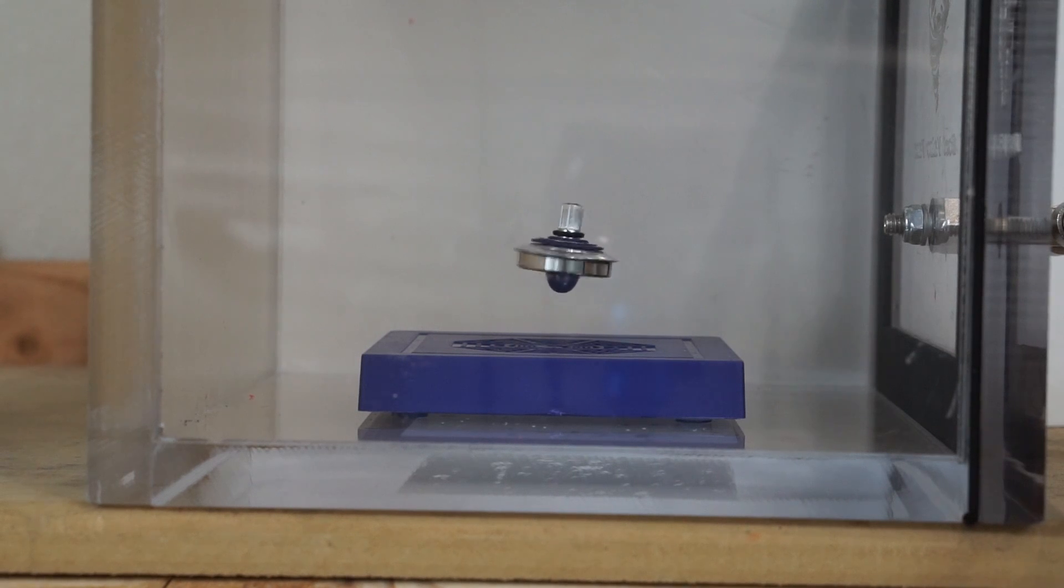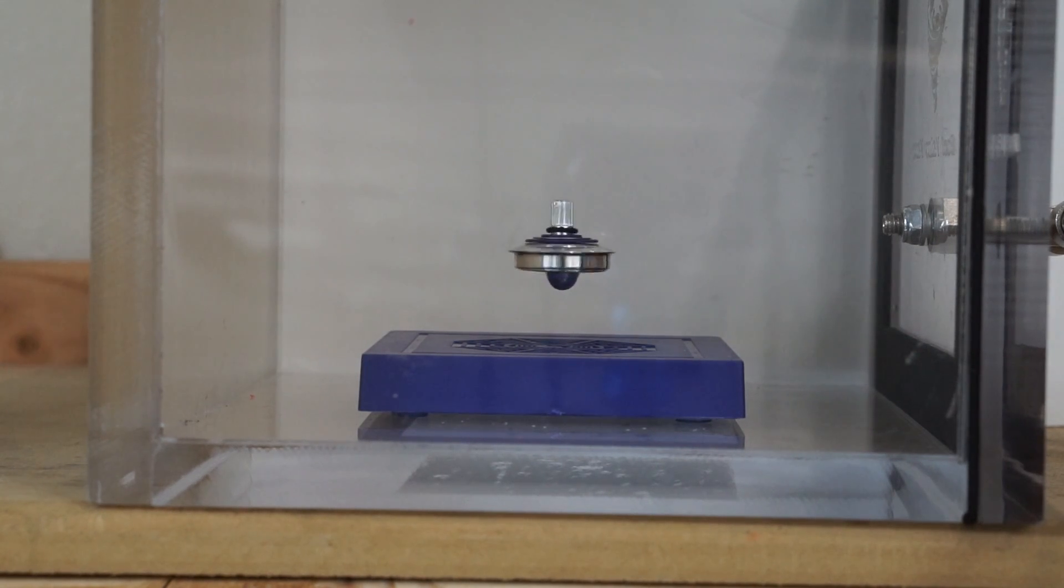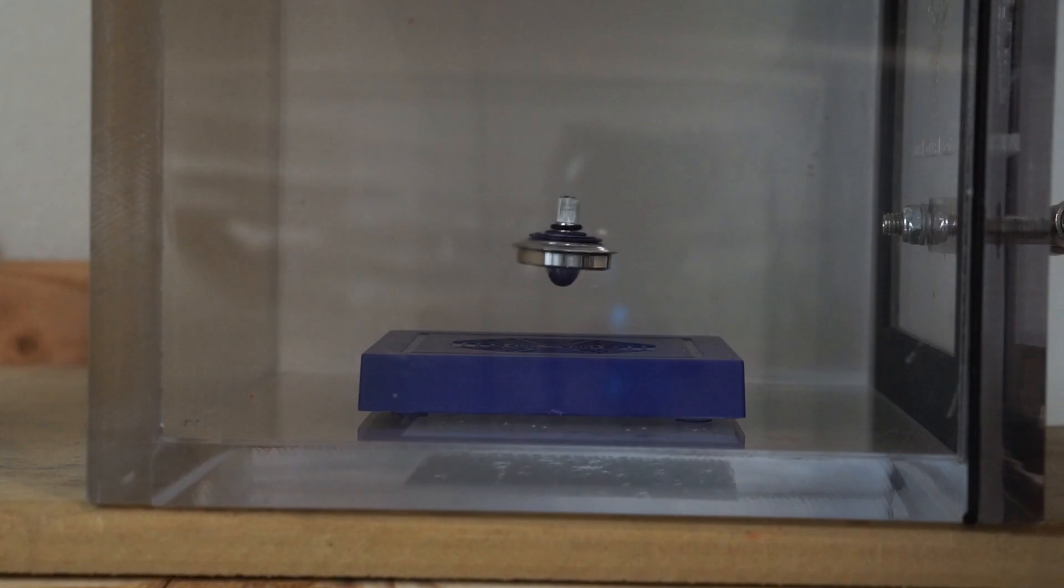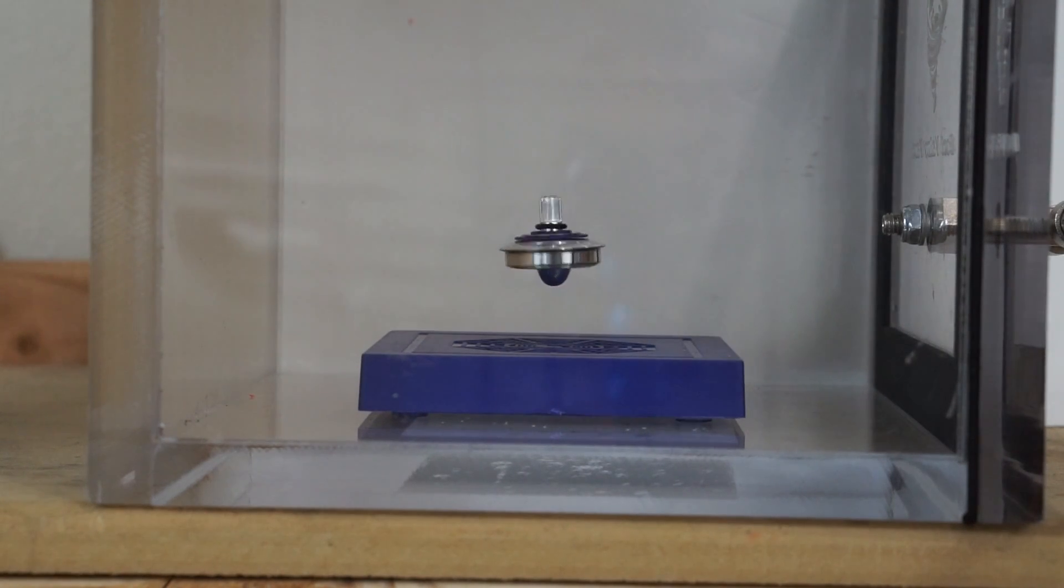We're at 0.5 atmospheres, half atmospheric pressure. We're down to 0.2 atmospheres, there's very little air in there right now. 0.1 atmospheres, so there's hardly any air resistance now. The air is very thin in there.